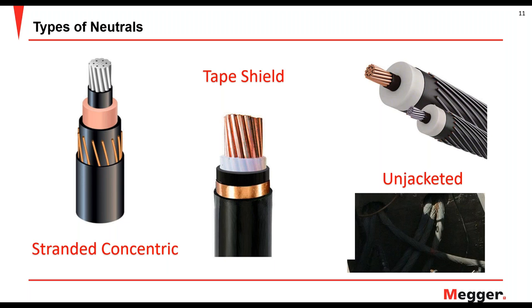There are different types of neutrals, each with its own perks. You have a stranded concentric in shielded and unshielded versions — the shielded version is better because it won't corrode as easily as the unjacketed version. Then there's your tape shield, which is good, but over time you can build up corrosion and oxidation between the layers of the tape shield itself, which when you run a TDR shot can make the actual length seem longer than it is, because the tape shield insulation is about twice the distance as the actual cable length due to how they're overlapped.